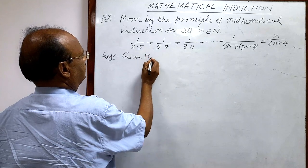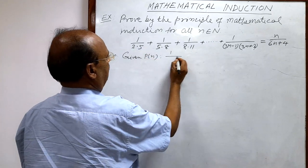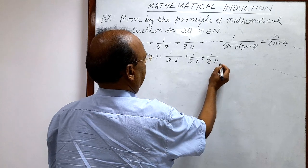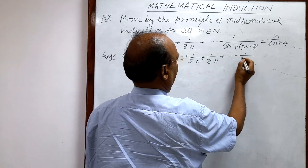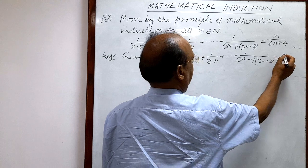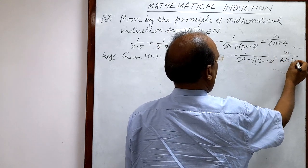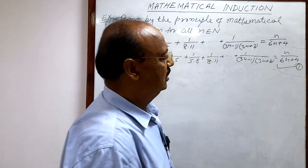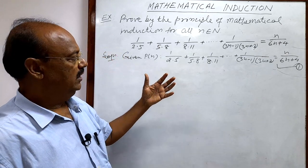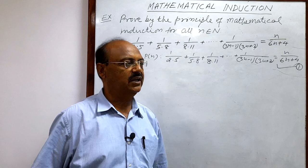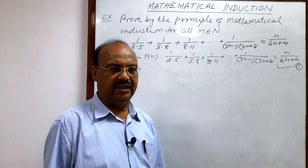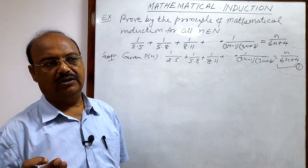The statement P(n) is: 1/(2×5) + 1/(5×8) + 1/(8×11) + ... up to 1/((3n−1)(3n+2)) = n/(6n+4). The total number of terms is n. Let us call this relation number 1.